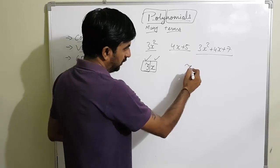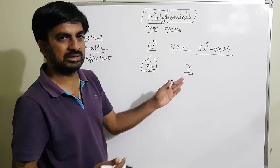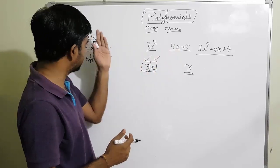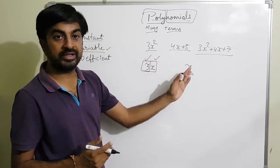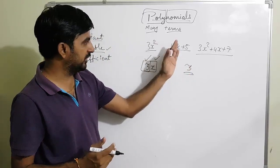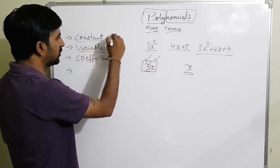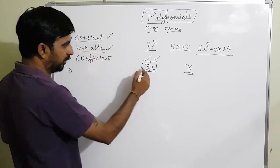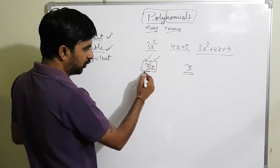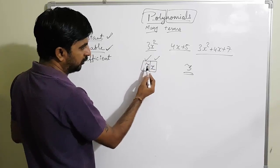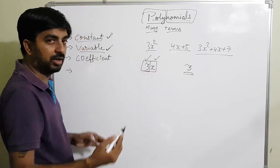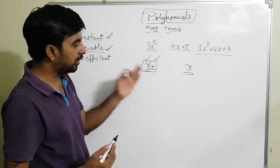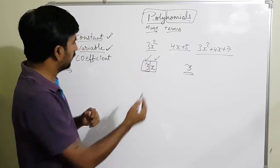If I write down just 3, only 3, this is also a polynomial. But first of all you need to understand what is constant and what is variable. A constant is a fixed value, and a variable means the unknown value which we need to find out — that is called a variable.